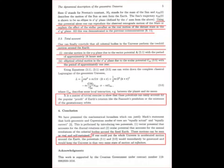One can finally conclude that all celestial bodies in the universe perform the two-fold motion around the Earth: 1. Circular motion in the x-y plane due to the vector potential A 3.1 with a period of approximately 24 hours and 2. Elliptical orbital motion in the x-y plane due to the scalar potential UPS 3.5 with a period of approximately 1 year. It is a matter of trivial exercise to show that these potentials can easily account for the popular proofs of Earth's rotation like the Foucault pendulum or the existence of the geostationary orbits.